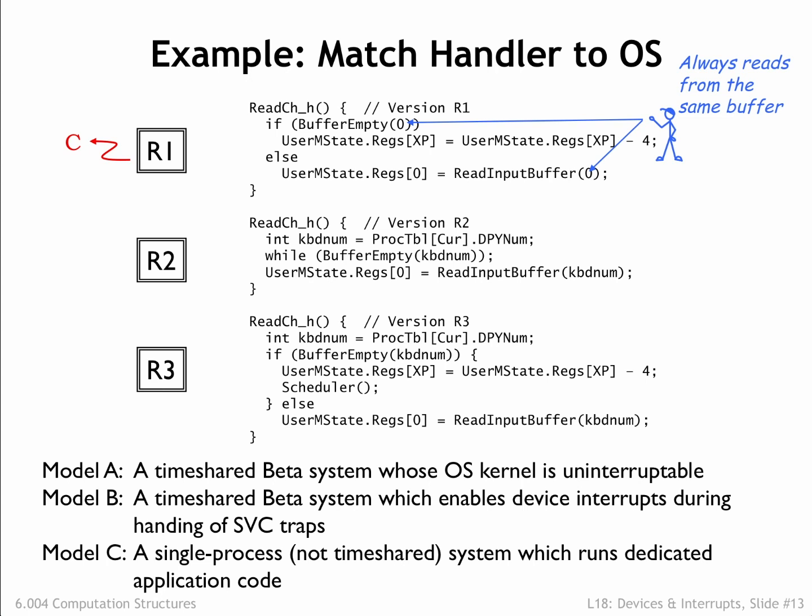Looking at R2, we see it's similar to attempt 1 from the previous section, which had the fatal flaw of a potentially infinite loop if attempting to read from an empty buffer. So this code would only run successfully on the Model B system, which does allow device interrupts even when the CPU is running inside an SVC call. So the keyboard interrupt would interrupt the while loop in R2, and the next iteration of the loop would discover that the buffer was no longer empty.